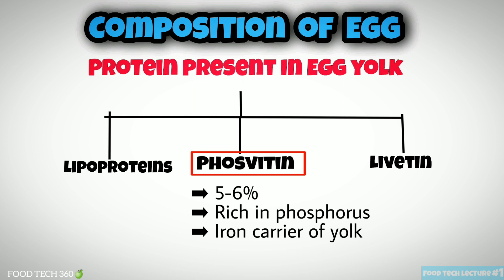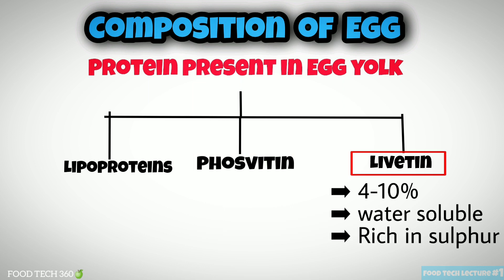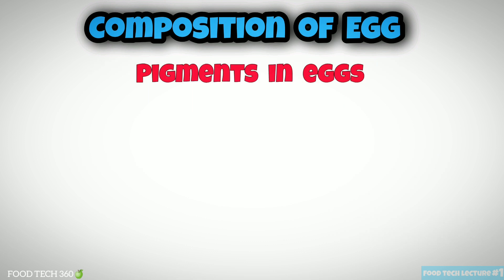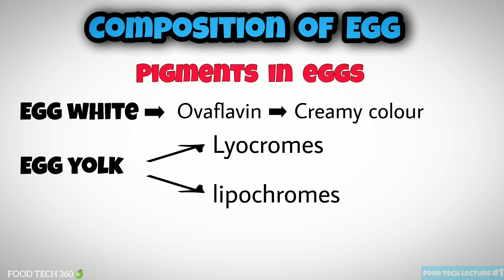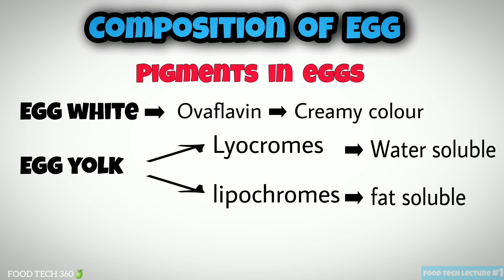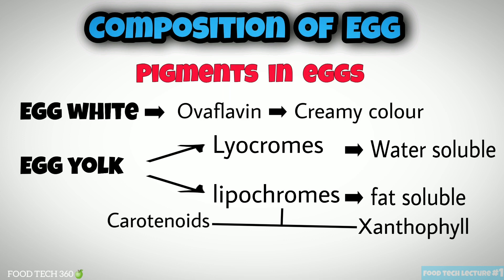Livetin comprises 4 to 10% of yolk solids; it is a water-soluble protein rich in sulfur. Regarding pigments in eggs: in egg white, the pigment called ovoflavin is responsible for the creamy color. In egg yolks there are two types of pigments — liochromes, which are water soluble, and lipochromes, which are fat soluble.